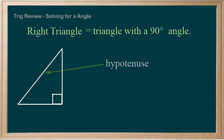Again, the hypotenuse is always the longest side, and always the side across from the 90 degree angle.